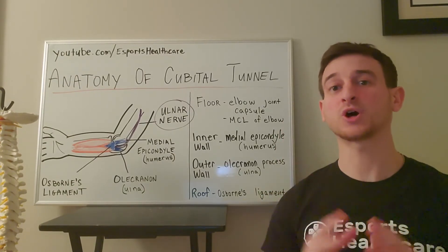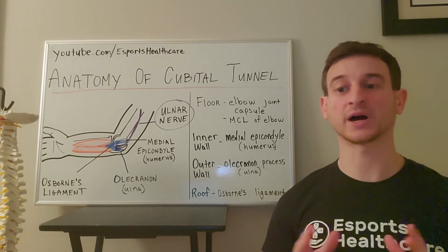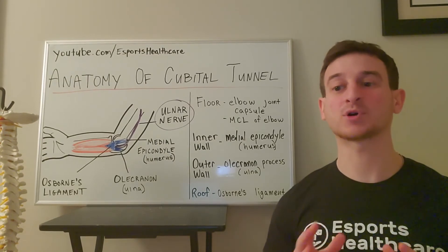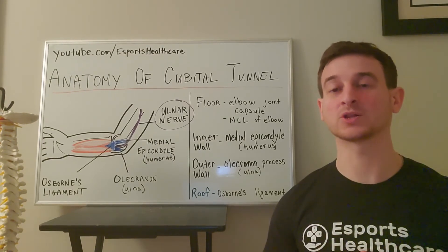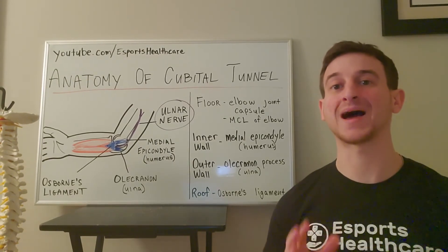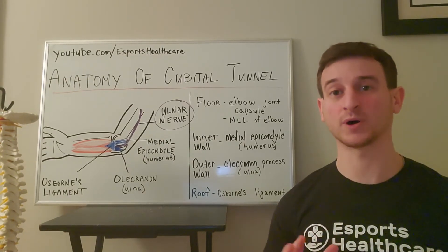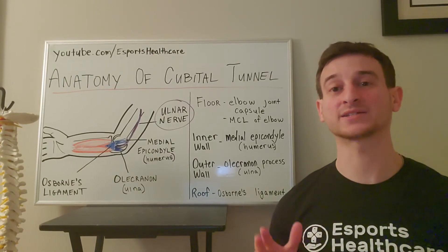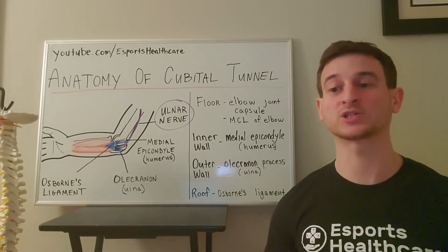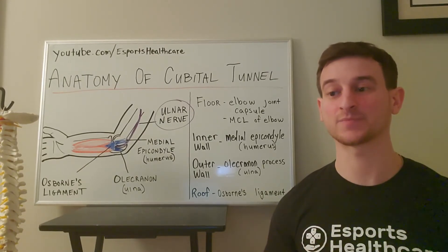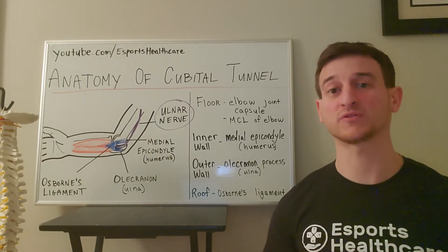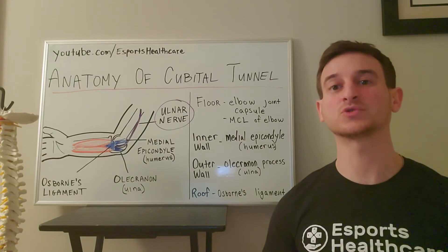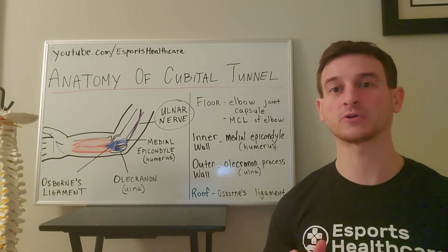To summarize, the cubital tunnel is an anatomical passageway located on the back side of the elbow where the ulnar nerve passes through on its way to the hand. Compression of the nerve at this area can lead to cubital tunnel syndrome.